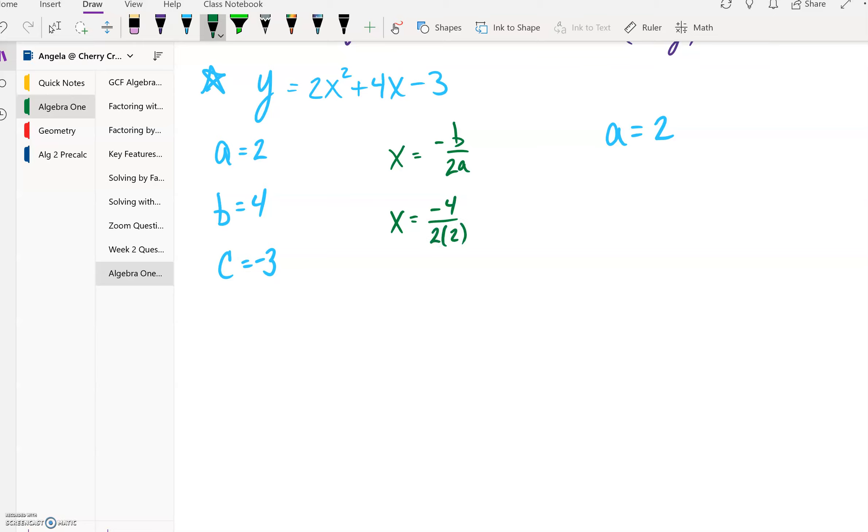So it's going to be the opposite of b divided by 2 times a, and that's where I plugged in my 4 and my 2 into my formula. And -4 divided by 4 is an x value of -1. So right away we know that our (h, k) value for our vertex form—the h value is going to be -1.